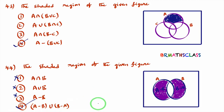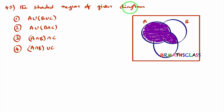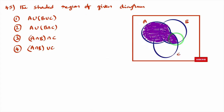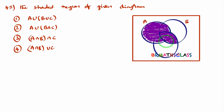I hope you are understanding. Now see question number 45 — the shaded region of the given diagram. You observe this shaded region: the full A is there, and you can also observe that B intersection C is also there. In this shaded part, full A is present and B intersection C is also part of it.